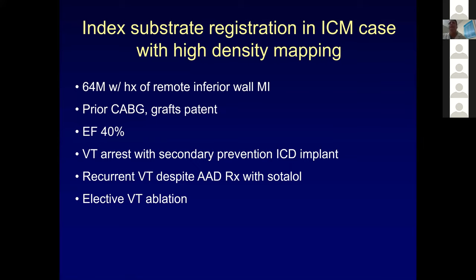This is an index case — substrate registration in ischemic with high density mapping. This is somebody who had an inferior wall MI, prior CABG, ejection fraction in the 40% range — certainly somebody that we think would benefit from ablation compared to amiodarone, when the ejection fraction tends to be better. They had a VT arrest with secondary prevention ICD implant. After some discussion, the perception was that amiodarone would not be a better option than ablation, so we went forward.